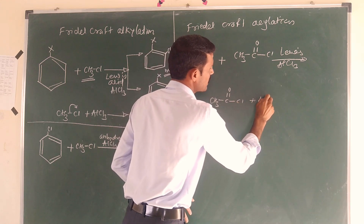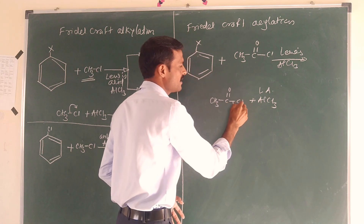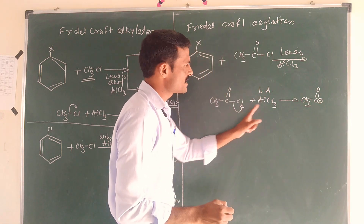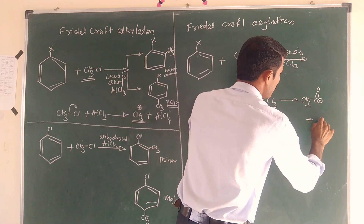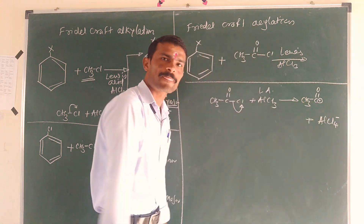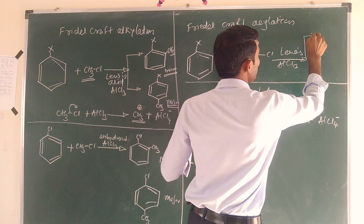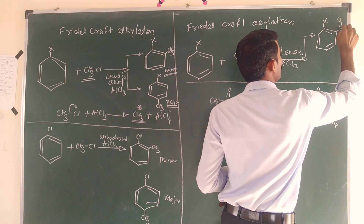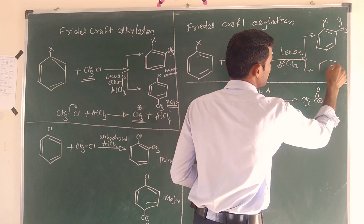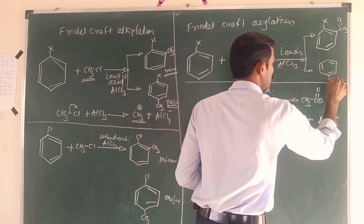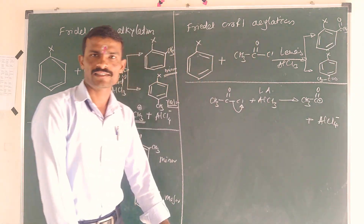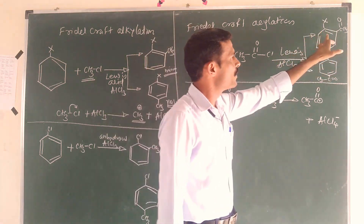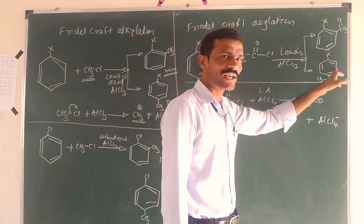The nucleophile. AlCl3 as the Lewis acid — you can use the electrophile, the acylium ion, using CH3COCl with AlCl3 to give AlCl4 minus. This forms the acylium ion which is the active electrophile. This is the acylium ion. We have to use the acylium ion.